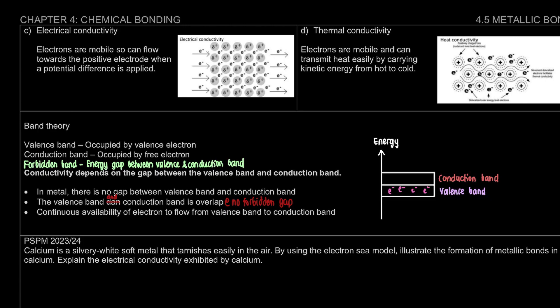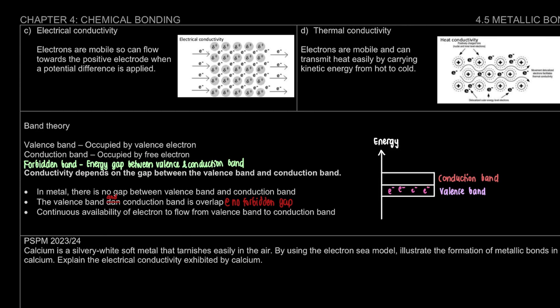For a conductor — a material that allows electrons to flow through, like the metal inside a charger cable — there's no band gap. For an insulator, like plastic, which does not allow electrons or electricity to flow, there is a gap between the valence band and the conduction band. For metal there's no band gap, so we draw the bands close together.